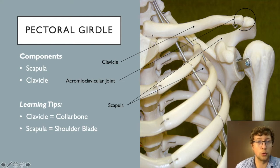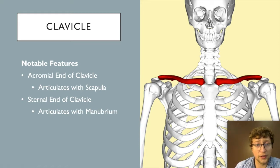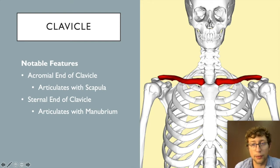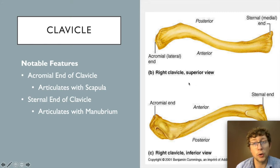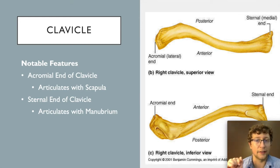The clavicle also attaches to the sternum. There are two ends of the clavicle: the acromial end, which articulates with the acromion of the scapula, and the sternal end, which articulates with the manubrium of the sternum. The sternal end is thicker, like a fist, while the acromial end flattens out like a pancake, reaching about the same height as the acromion.